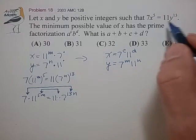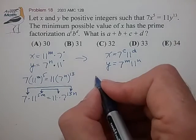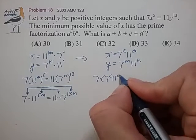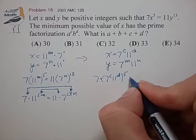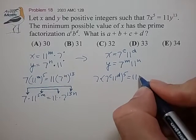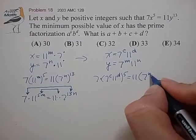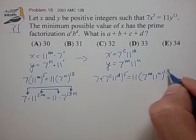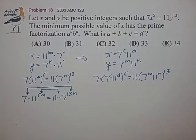And let's plug that into this equation up to the right here. And we find that 7 times (7^c × 11^d)^5 is equal to 11 times (7^m × 11^n)^13. Let's bring these exponents down in through the parentheses.